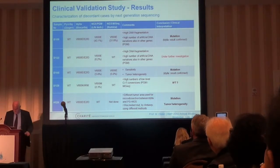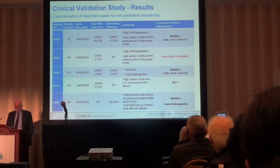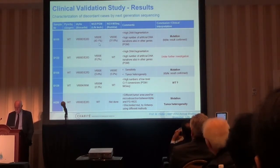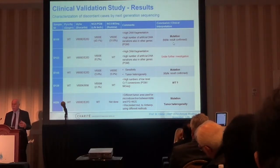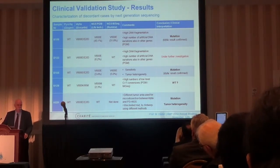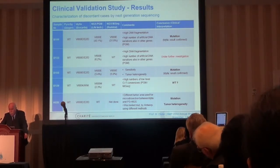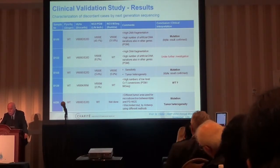In the first case: wild-type by pyrosequencing, the IDYLLA system called mutation, and NGS also confirmed a mutation. So altogether, as a clinically working pathologist, we should have told this patient it's not wild-type — it's a mutation. He should have received the drug, but in reality he didn't, because in the first round the pyrosequencing said wild-type.